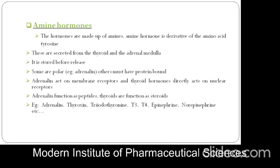Next are amine hormones. These hormones are made up of amines and are derivatives of the amino acid tyrosine. They are secreted from the thyroid and adrenal medulla, found on the kidney, and are stored before release. Some are polar, such as adrenaline, and others must be protein-bound. Adrenaline acts on membrane receptors, while thyroid hormones directly act through nuclear receptors. Adrenaline functions like peptides; thyroid hormones function like steroids. Examples include adrenaline, thyroxine, triiodothyronine (T3), epinephrine, and norepinephrine. These are catecholamines.